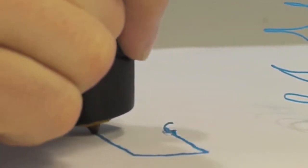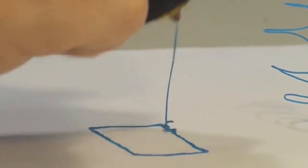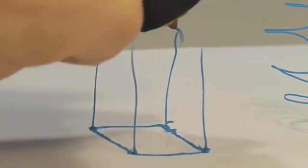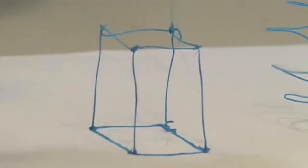The 3Doodler is the world's first and only 3D drawing pen. It's been designed to be compact and easy to use. No software, no computers. You just plug it in and can start drawing anything within minutes.